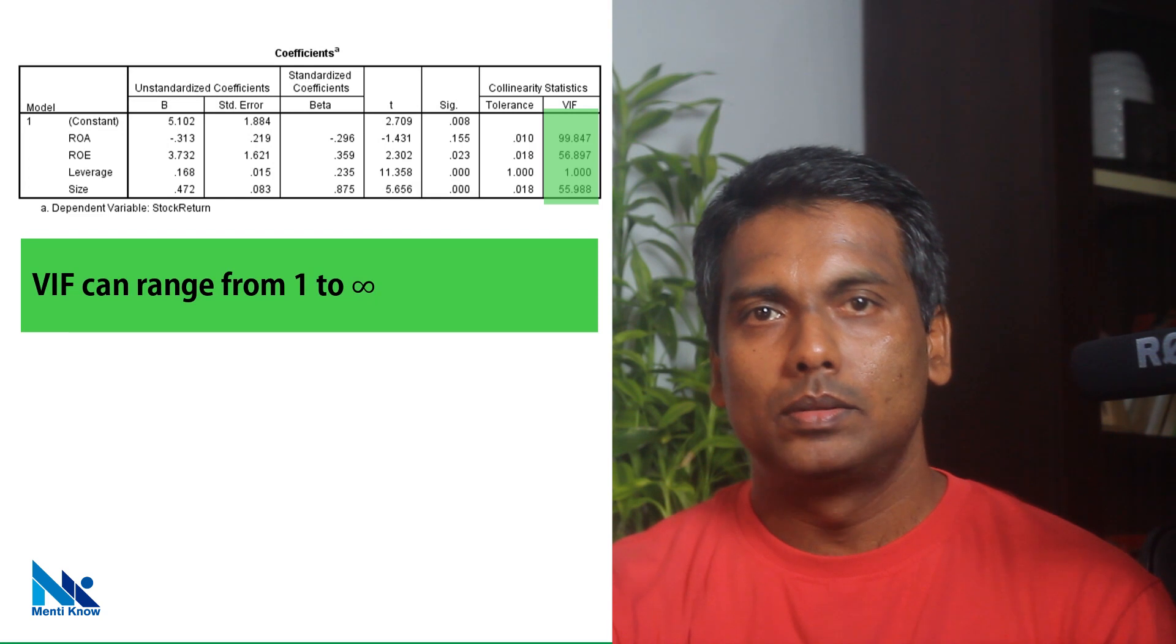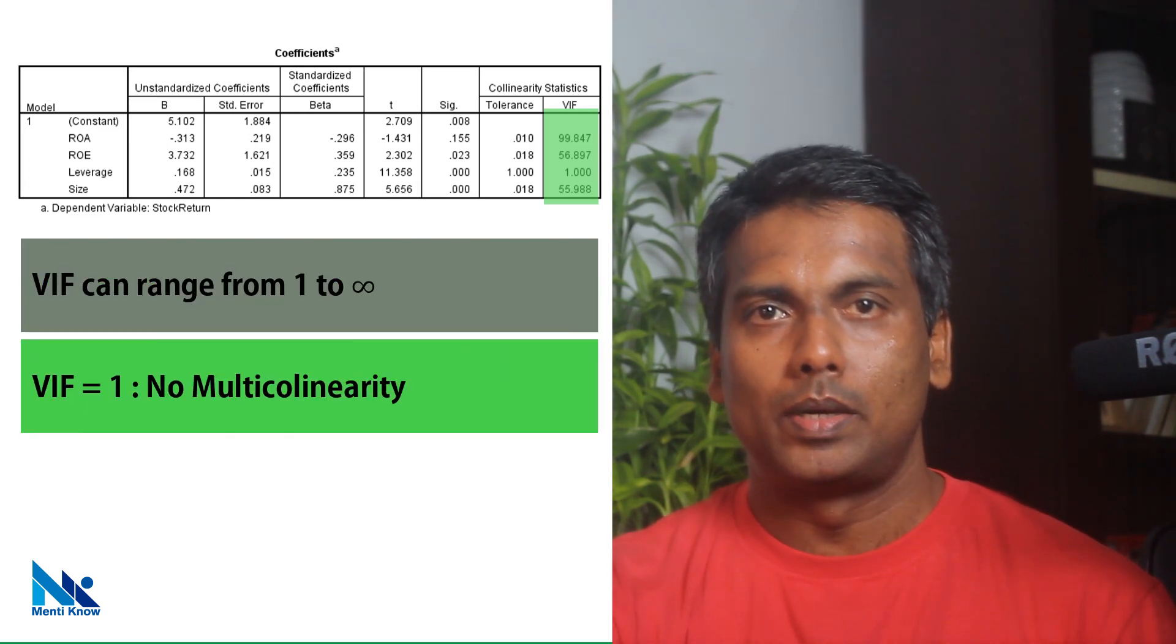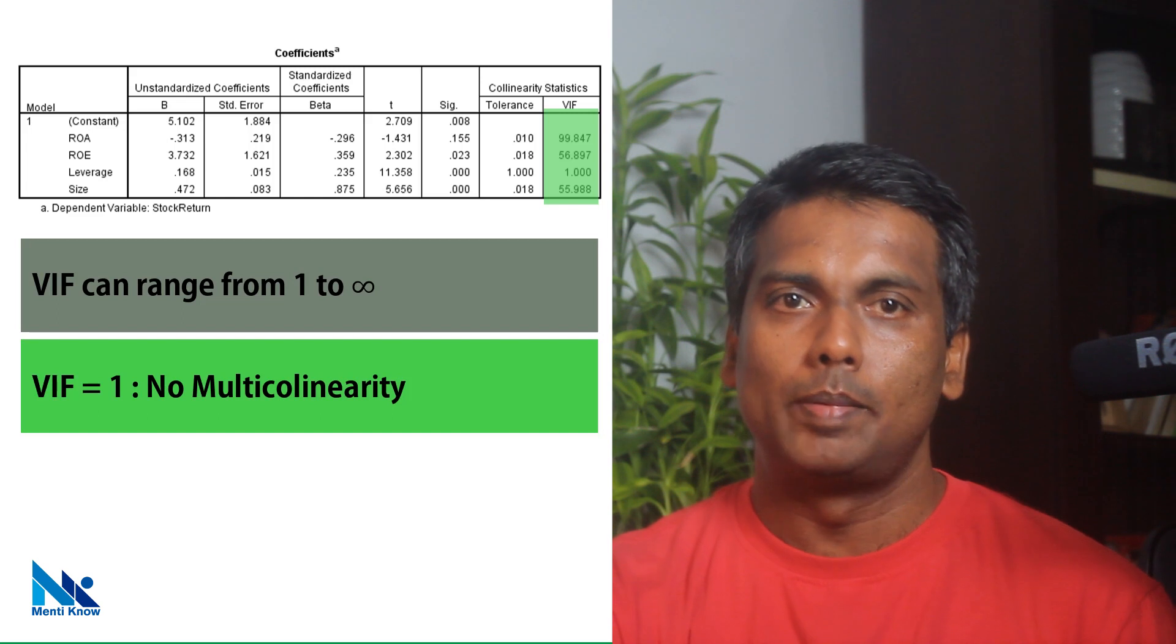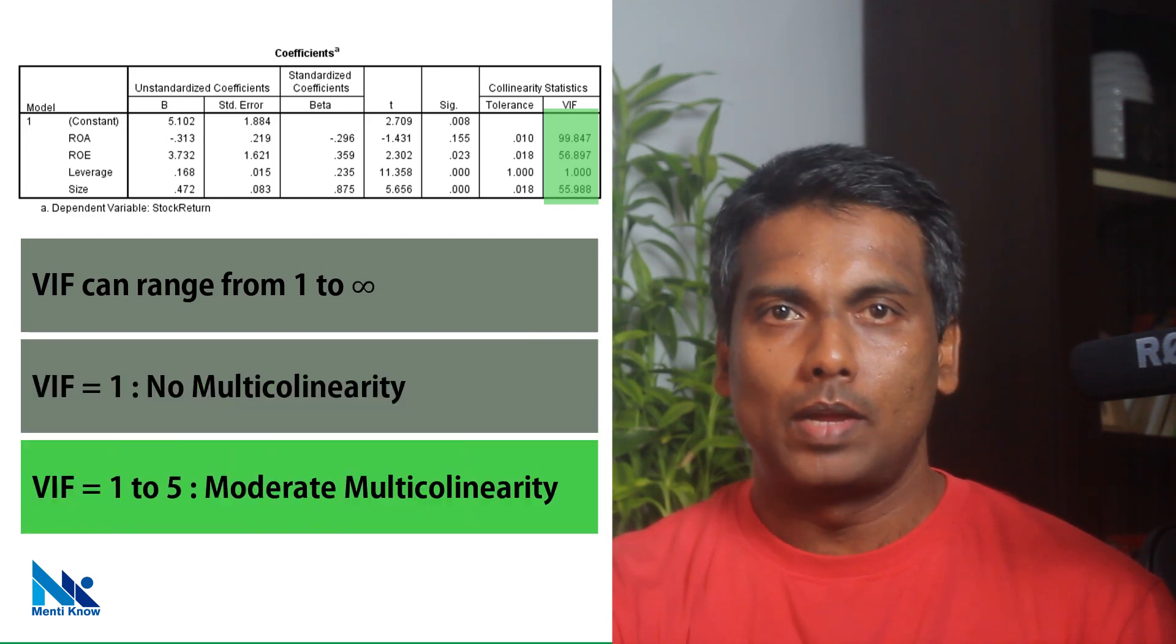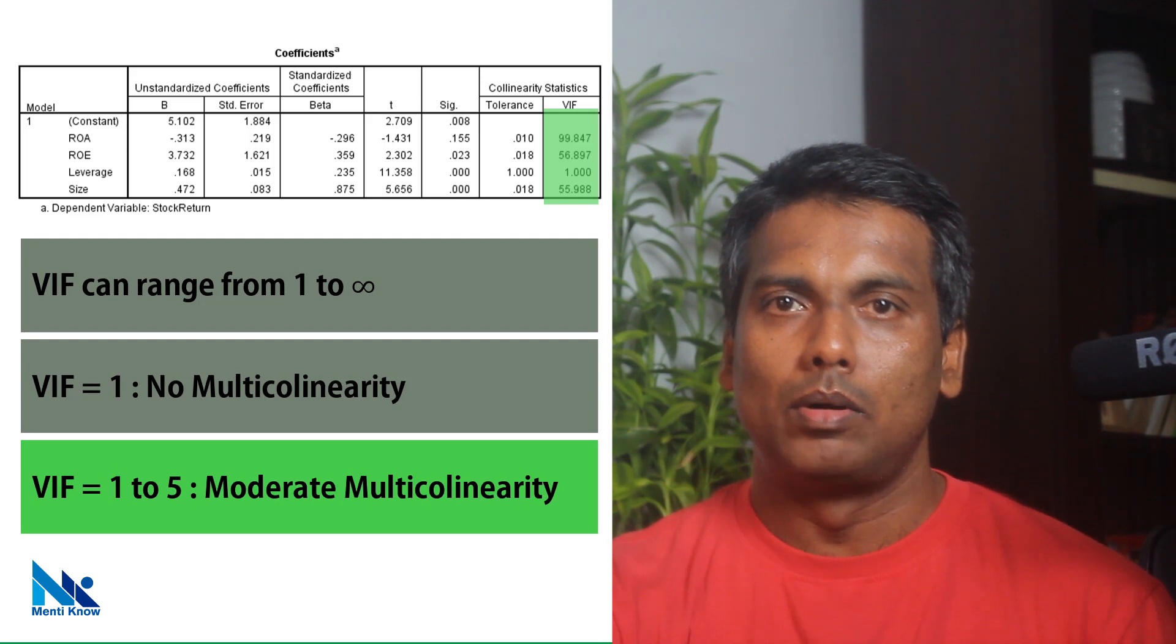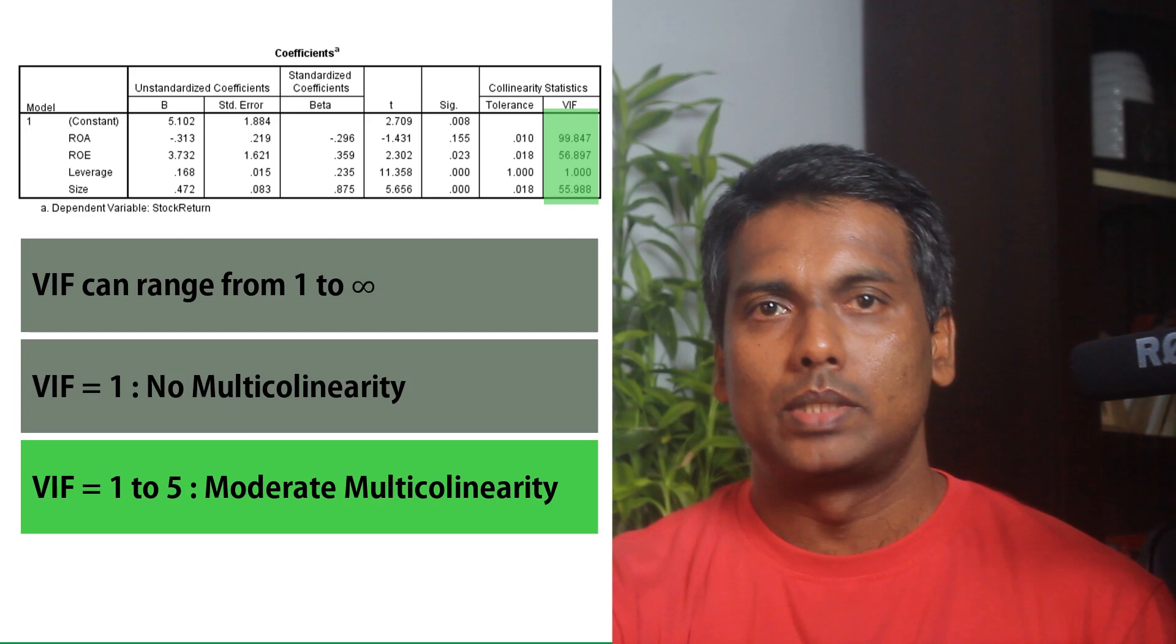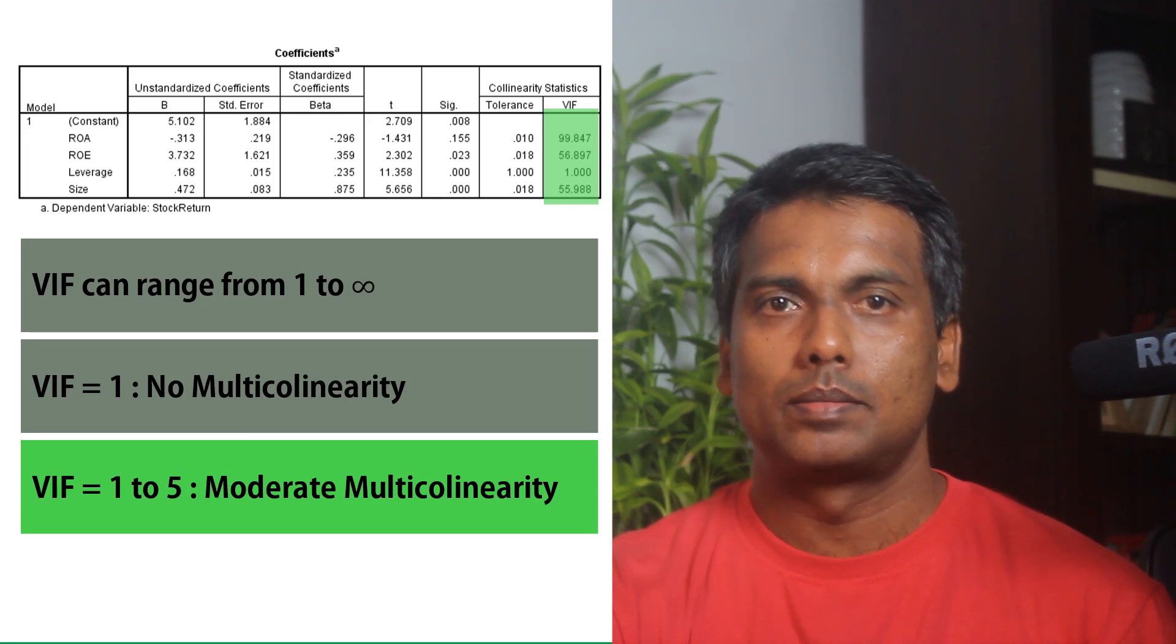VIF indicates the strength of correlations between independent variables. The VIF value can range from 1 to infinity. If VIF value for a particular independent variable is equal to 1, that independent variable is not correlated with other independent variables. If the VIF value is between 1 and 5, there is a moderate level of multicollinearity. This level of multicollinearity usually does not cause serious problems in the regression results.